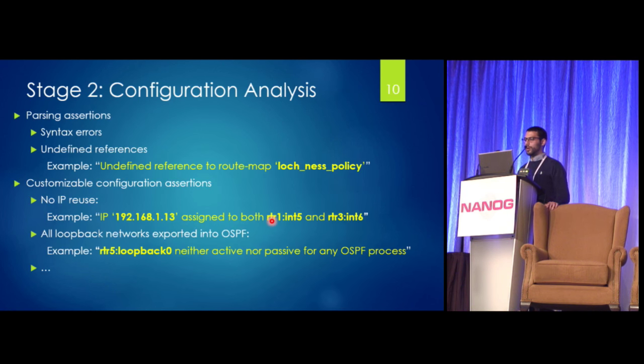In stage two, we basically try to figure out all the different simple problems that might arise during initial check of the configurations. For instance, if there are any syntax errors, that'll be reported. Or common problems like having an undefined reference, let's say to a route map that doesn't exist, would be reported here. And on top of that, we also have a language that we've designed for asking queries about the configurations. And we've also provided a library of common checks that you may want to use.